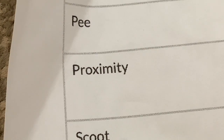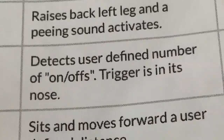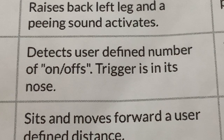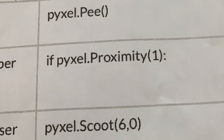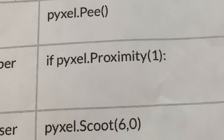The next one is proximity — detects a user-defined number of on-offs, and the trigger is in its nose. This is basically operating the infrared emitter and receiver, and it only works from about an inch away. The Python code is if pixel.proximity(1), so you've just got to put your hand in front of his nose once. We've got a colon here because it's a conditional — you've got to put something after, or else nothing will happen and you'll get an error.